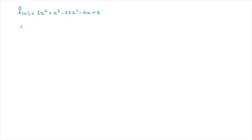Step 1: we use the rational root theorem, or rational zero theorem, to come up with a list of all of the potential zeros of this polynomial function. The rational zero theorem tells us that any zero must be of the form p over q, where p is a factor of the constant term — that's 6 here — and q is a factor of the leading coefficient, which is 2.